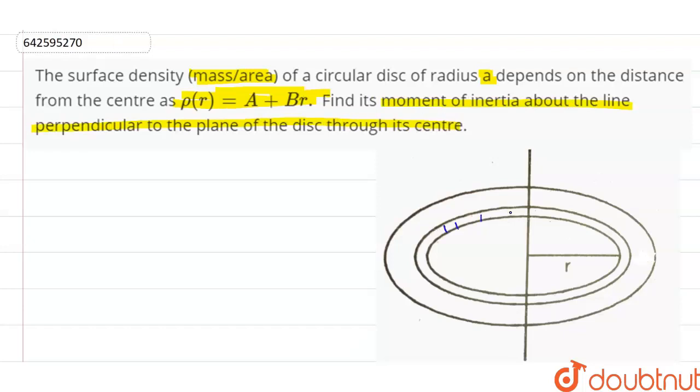Let's consider a small elemental ring at a distance r from the line about which we need to find the moment of inertia, and the thickness of this ring is equal to dr.